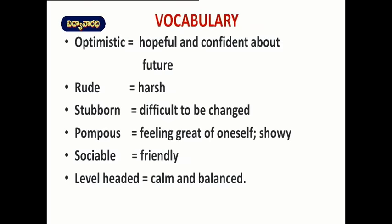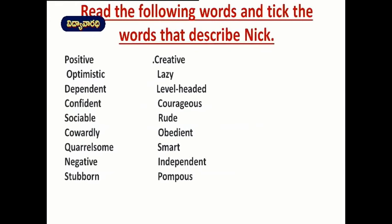Now, getting into the topic: read the following words and tick the words that describe Nick. Is Nick positive? Yes, Nick was positive and that is why he became successful. Optimistic? Yes — optimistic means having a broad mind and feeling confident about the future. This is also correct for Nick. Dependent? In the beginning he was dependent, but later he became independent, so we cannot take this one. Confident? Yes, he was confident and that is why he became successful.